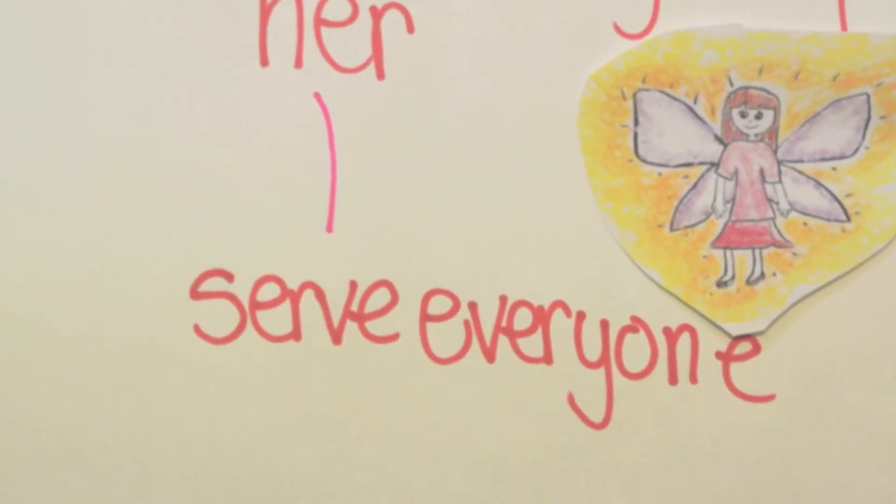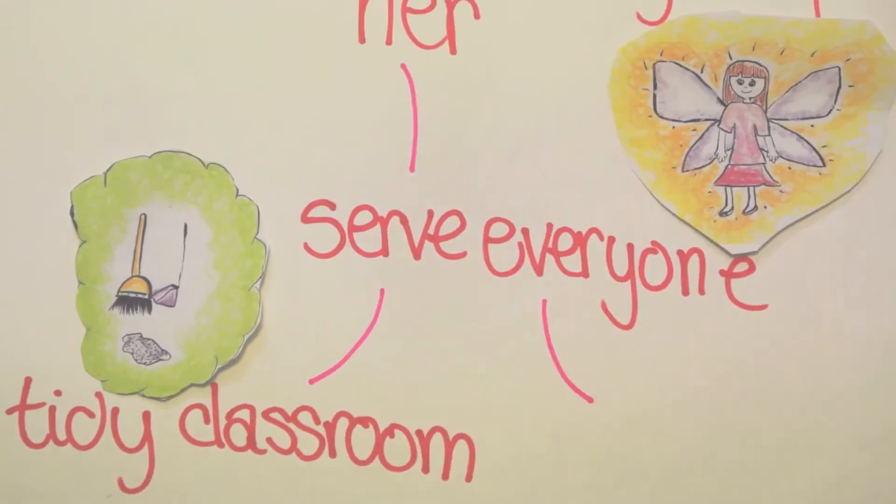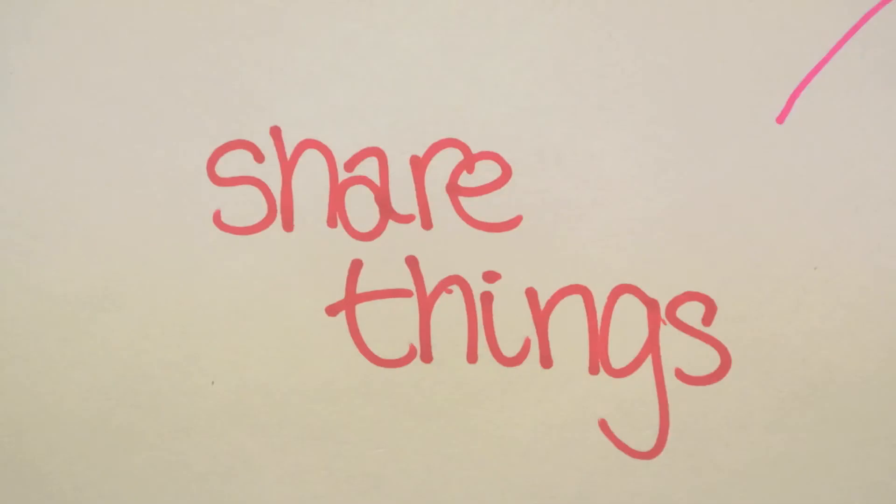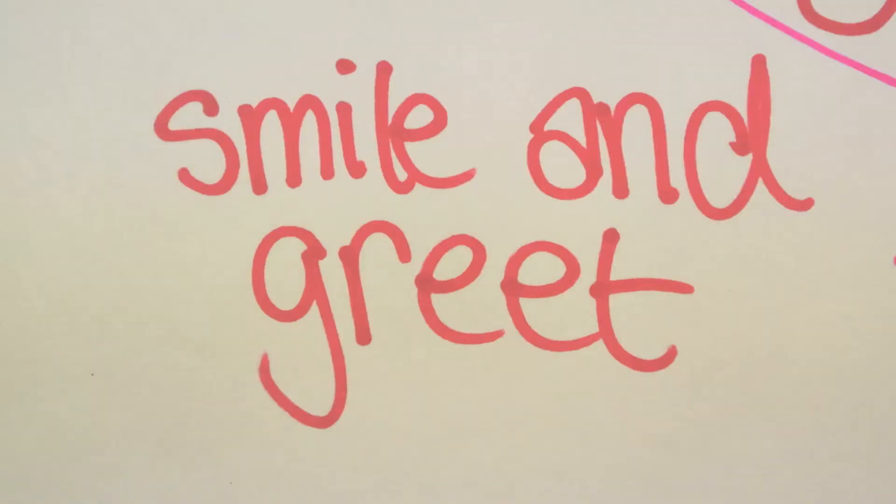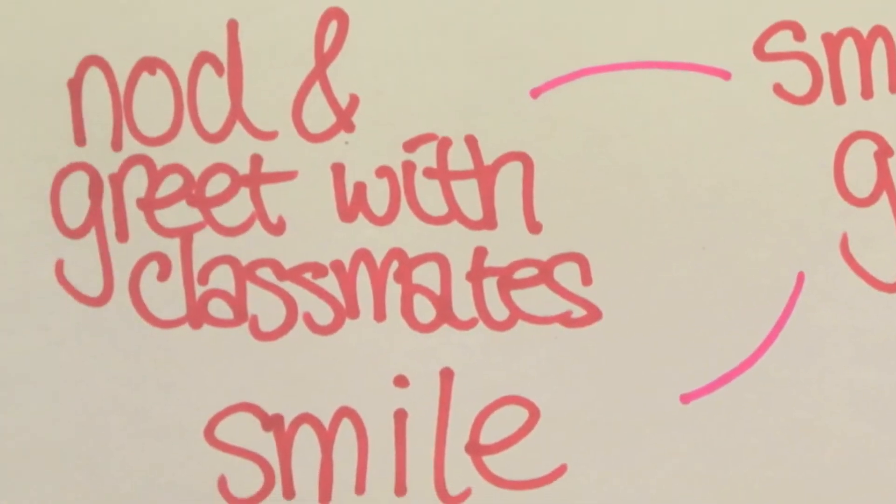Our first branch is labeled serve everyone. Connie volunteers to tidy the classroom. Our second branch is labeled share things. Connie also shares cookies and extra stationery. Our third and final branch is labeled smile and greet. Connie smiles and greets her classmates.